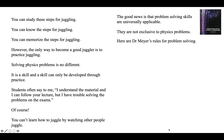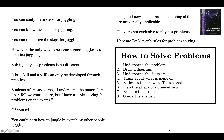Here are Dr. Meyer's rules for problem solving: understand the problem; draw a diagram; understand the diagram; think about what is going on; estimate the answer — how big is it going to be?; plan the attack — sometimes you can see all the way to the solution, sometimes you can't and the answer is to just do something; calculate; then check your answer — does it make sense? Use a different equation to verify. Don't be in a hurry to go to the next problem — make sure you fundamentally understand this one. Notice there's no rule that says thumb through the book looking for an equation to use. That is a rotten strategy.